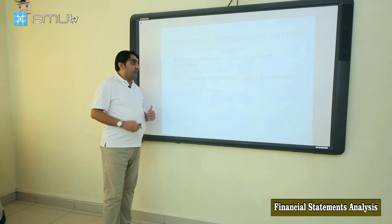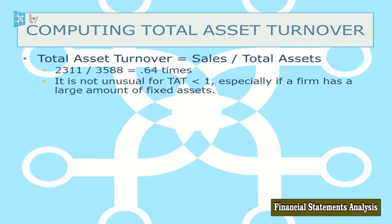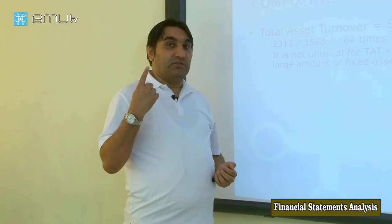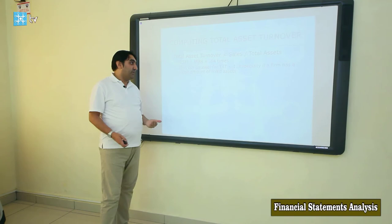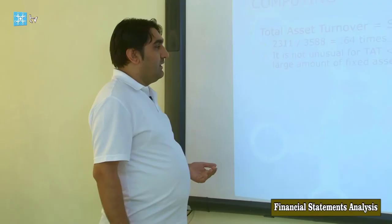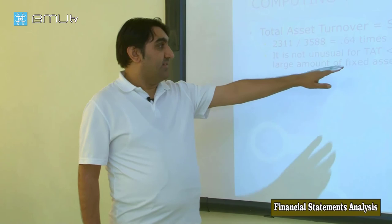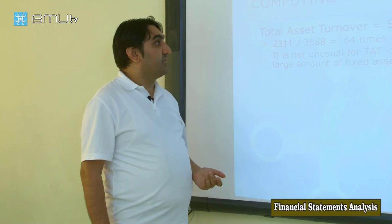The next ratio is total asset turnover, applying the same logic to total assets. It is calculated as sales divided by total assets, giving 0.64 times. This shows that one dollar of total assets generated 64 cents in sales. Of course it is better to have this ratio higher. It is not unusual for total asset turnover to be less than one, especially for firms with a large amount of fixed assets — that is normal for these companies.